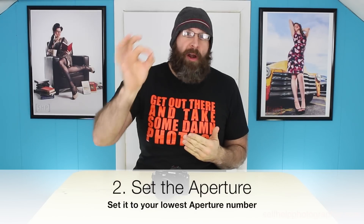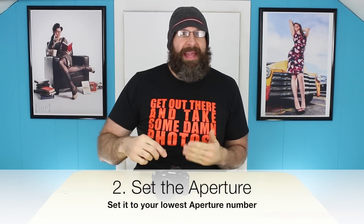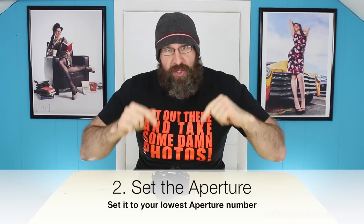After ISO, you set your aperture, and you'll want to start with the largest aperture available on your lens — that will be the lowest aperture number. On this lens that's f/2.8, but your smallest number will vary depending on the lens you are using. It could be f/1.8, f/2.8, f/3.5, or f/5.6.